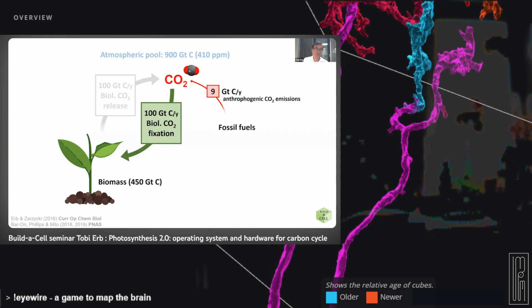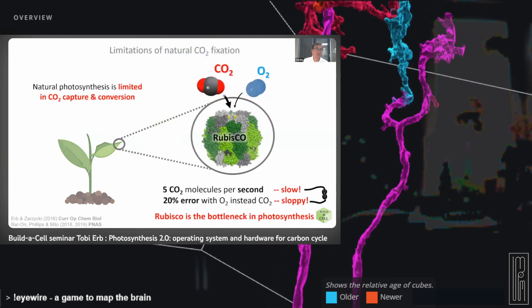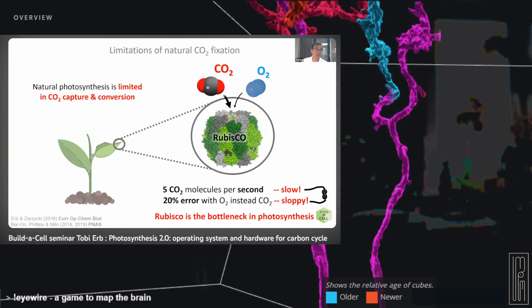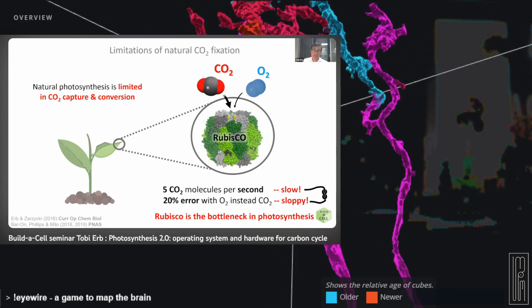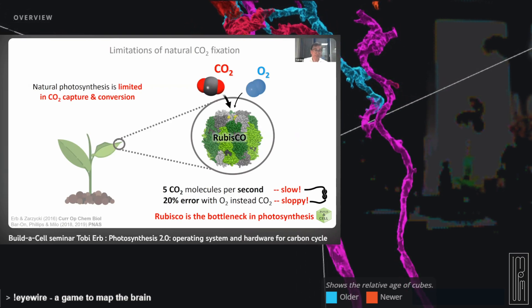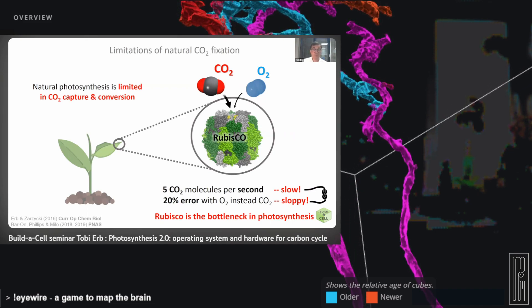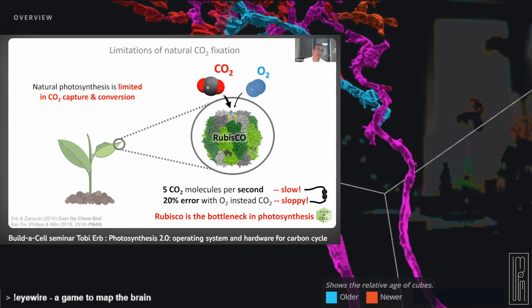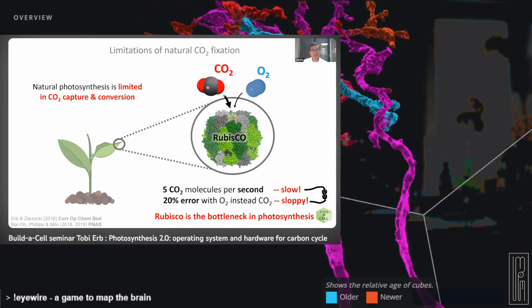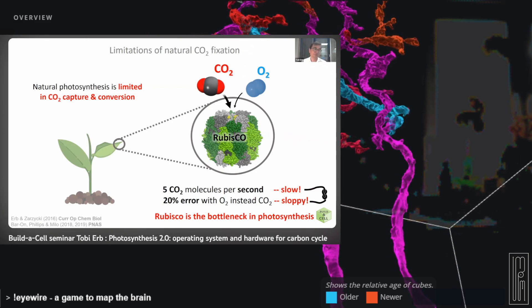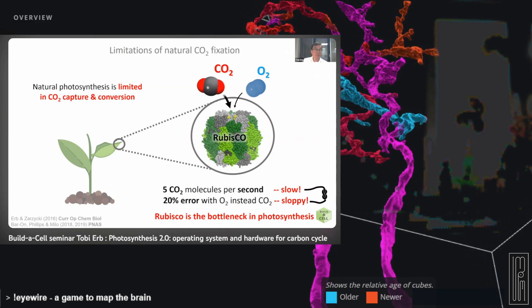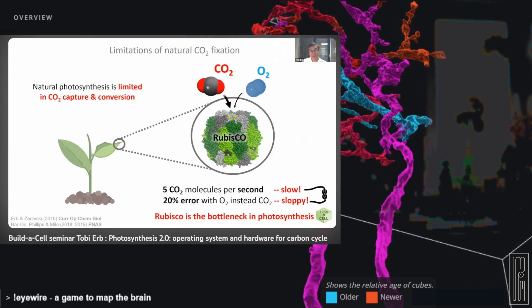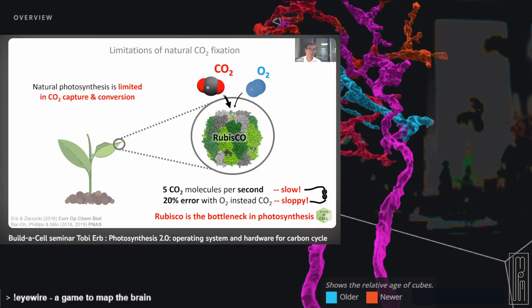More importantly, the enzymes and pathways involved in CO2 fixation are also not perfect. This becomes obvious when you look at the most important process of biological CO2 fixation: the Calvin-Benson-Bassham cycle, or the dark reaction in photosynthesis. The CO2 capture is done by one single enzyme called RuBisCO — ribulose-1,5-bisphosphate carboxylase/oxygenase — which is essentially the bottleneck of CO2 capture and conversion.